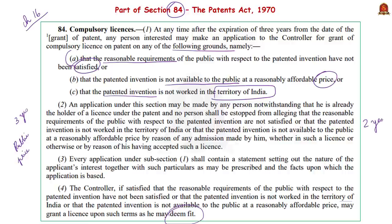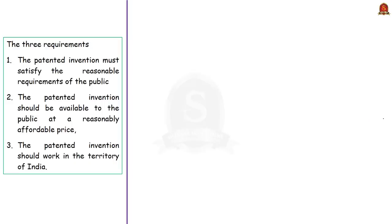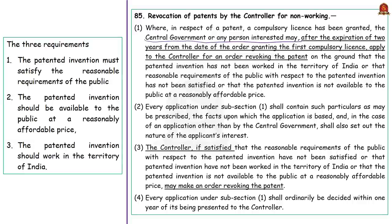If the conditions are not met within two years from the date of the order granting the first compulsory license, the central government or any interested person may apply to the controller for an order revoking the patent on the ground that the patented invention has not fulfilled any of the three conditions. If the controller of patents finds substance in the application for revocation, she may make an order revoking the patent. From these provisions, we understand that a patented invention must satisfy the Indian public while the patentee has an exclusive right for a limited period to commercialize the invention.